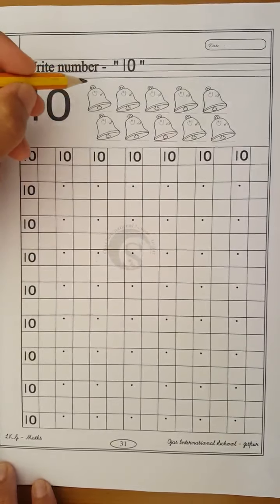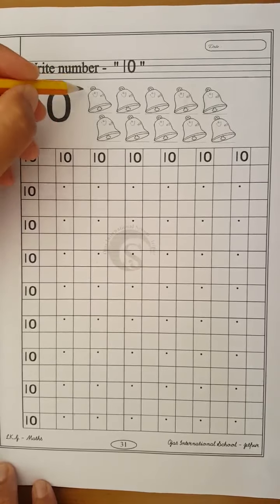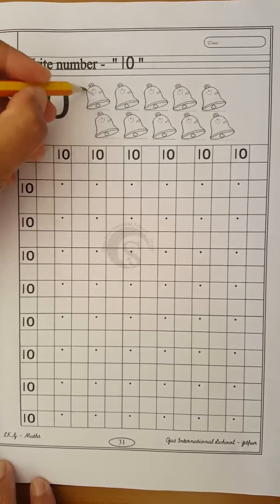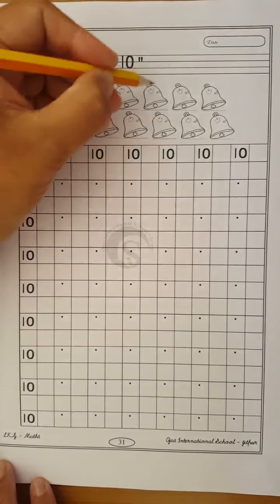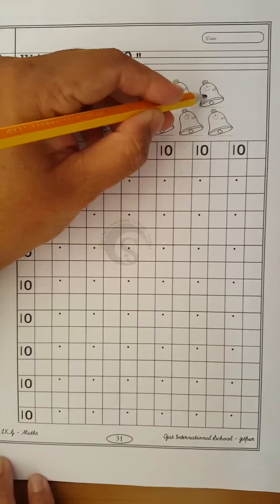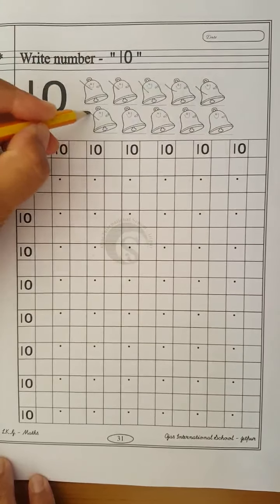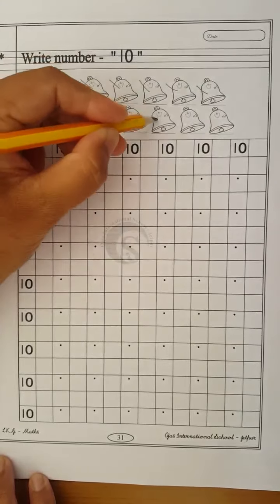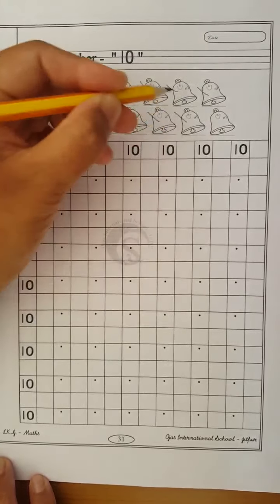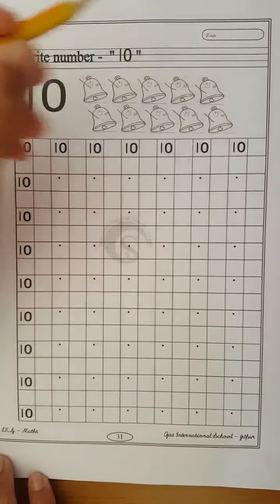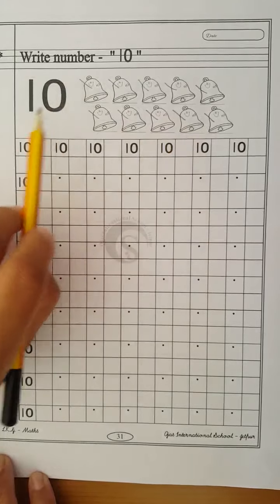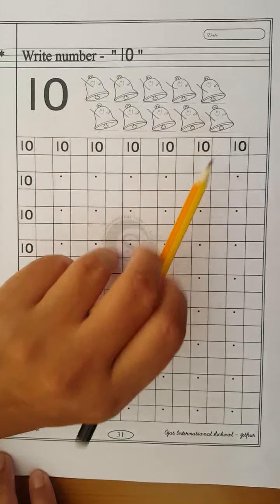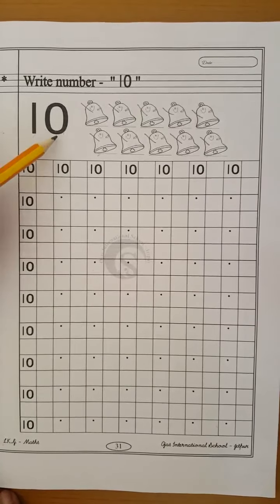And how are you counting? Yes, cut and count. 1, 2, 3, 4, 5, 6, 7, 8, 9, and 10. 10 bells. Okay, 10 number, 10 bells. 1, 0, 10.